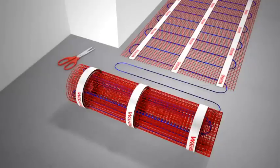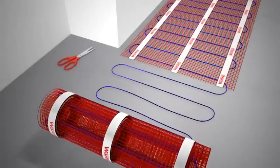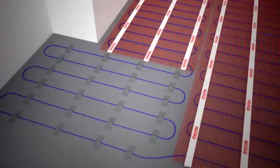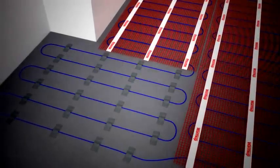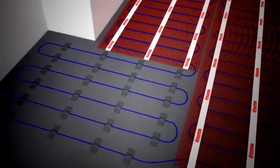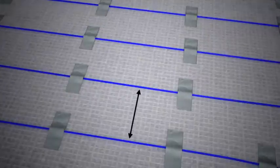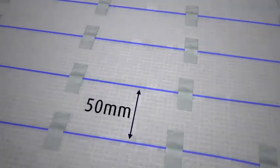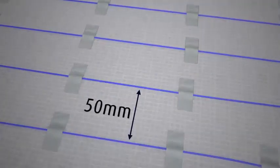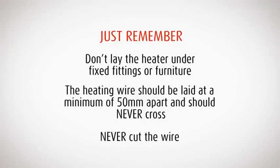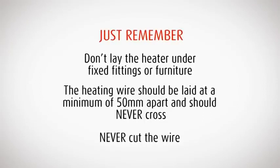When you need to cut the wire away from the mat to fit around furniture or fittings, do this taking extra care not to cut the wire. Then tape the heater wire securely to the floor using small pieces of standard duct tape. Lay the loose heater wire a minimum of 50mm apart. The wires should never cross. Just remember, don't lay the heater under bathroom furniture.